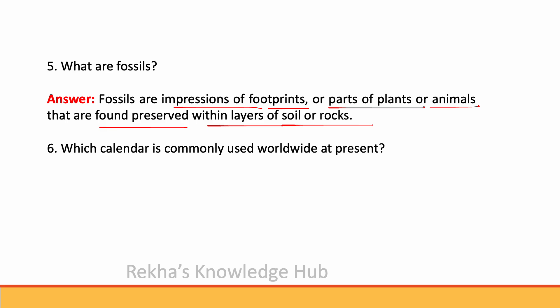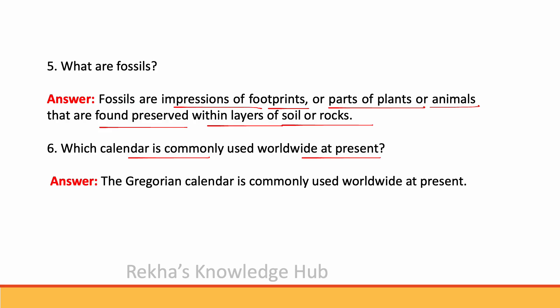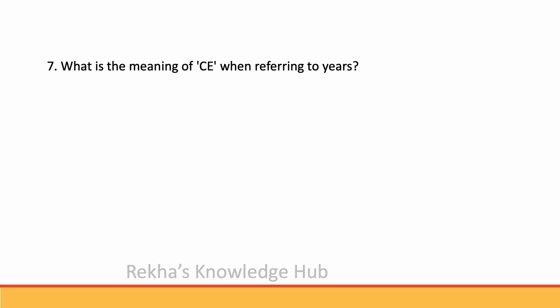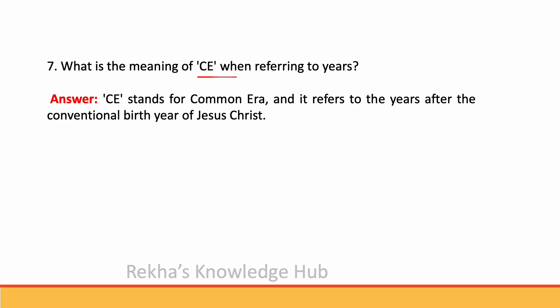This calendar is commonly used worldwide at present. What is the meaning of CE when referring to years? CE stands for Common Era and it refers to the years after the conventional birth year of Jesus Christ.